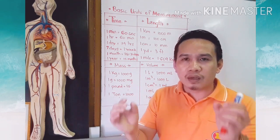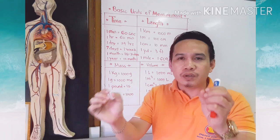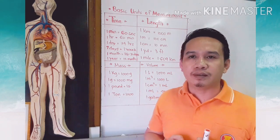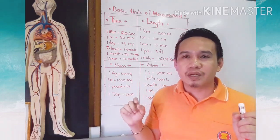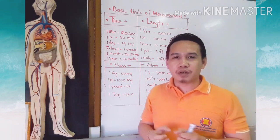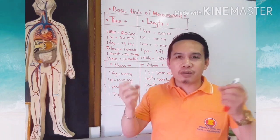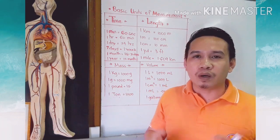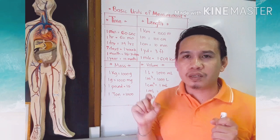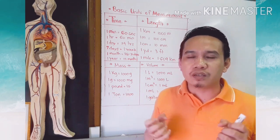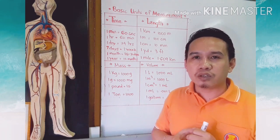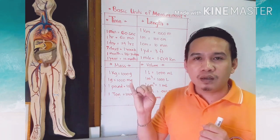If someone would ask you what is the length and width of your table, how are you going to answer that? Sometimes we respond, 'I don't know, I don't have any measuring instrument.' What should we do? That question will be solved if we use any measuring instrument — it could be a ruler or a meter stick.